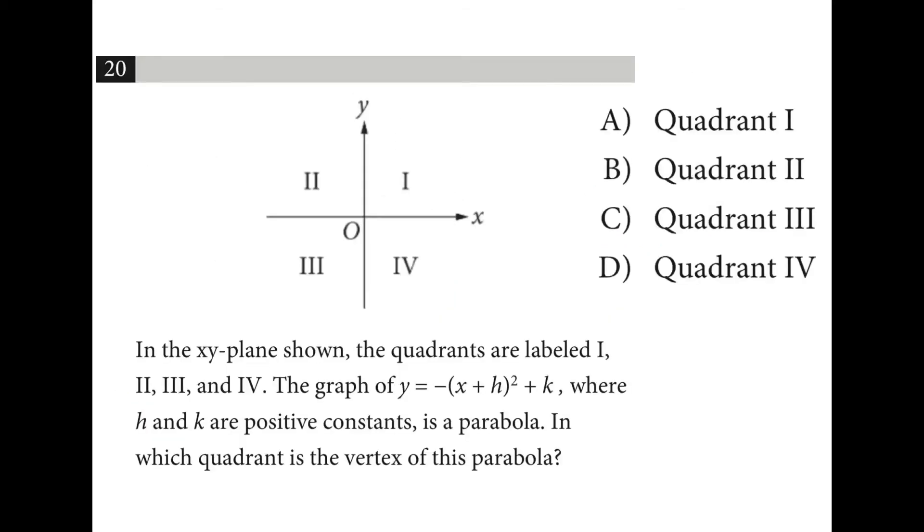If the parabola has this equation, we know that it opens down because of the negative. We know that it has a vertex of negative h comma k. So if the vertex is going to be somewhere in quadrant 2, because they tell us h and k are positive. And it opens down. Well, they just want to know what quadrant is the vertex in, quadrant 2.